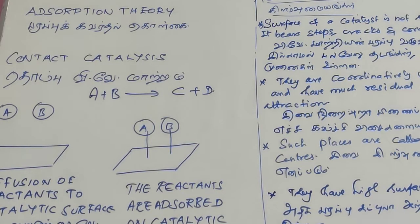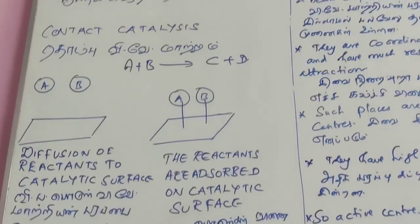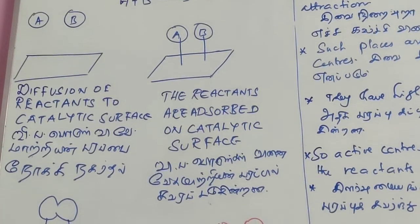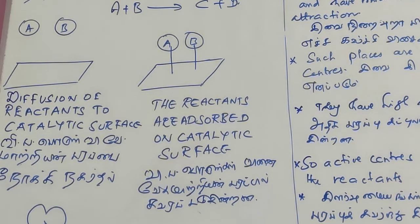The first step is: diffusion of the reactants towards the catalytic surface. The reactant molecules move toward the catalytic surface. Just like buying a ticket and going into the theater to sit down, the reactants are adsorbed on the catalytic surface.